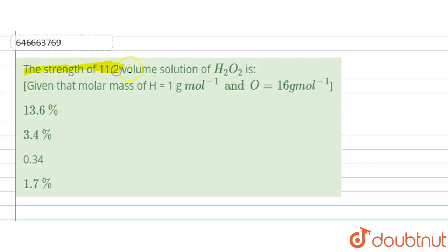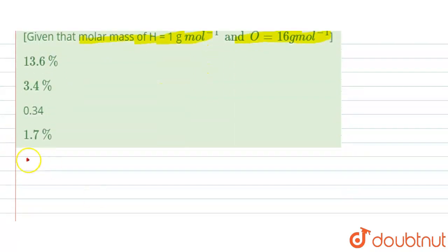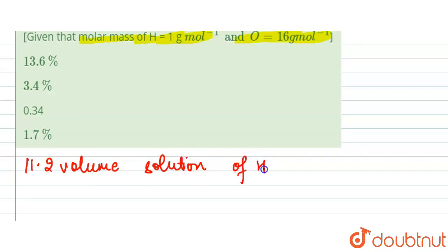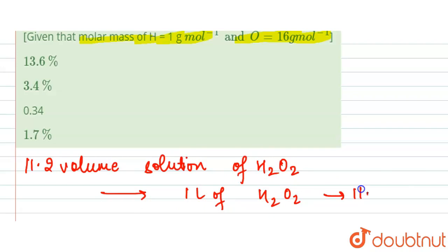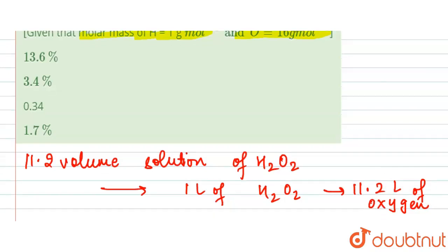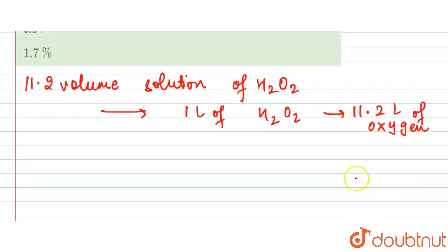The question asks for the strength of an 11.2 volume solution of H₂O₂. We are given the molar masses of hydrogen and oxygen. An 11.2 volume solution of H₂O₂ means that one liter of H₂O₂ gives 11.2 liters of oxygen at standard NTP conditions — 25 degrees Celsius and one atmosphere pressure.